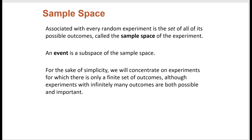In a random experiment, we have the set of all possible outcomes — the hurricane hits, the hurricane doesn't hit, you win, you lose, you win partially — and these are all called the sample space. An event is a subspace of the sample space. We'll concentrate at first on experiments with only a finite set of outcomes, but in your project you'll be looking at the lottery, weather, or medical conditions that may not have a finite set.